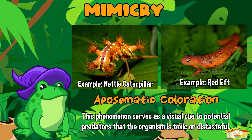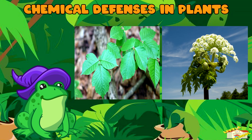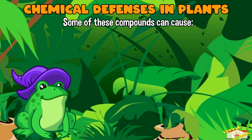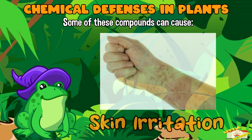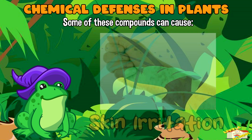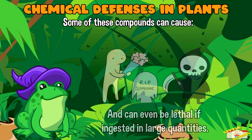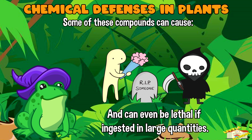Chemical defenses in plants: poisonous plants often produce toxic compounds as a defense mechanism against herbivores. Some of these compounds can cause skin irritation, digestive issues, or even be lethal if ingested in large quantities.